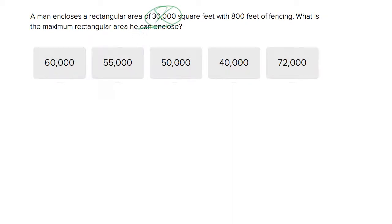Or he could, you might say, he could enclose. So the 30,000 doesn't matter at all. They're basically saying, if I have 800 feet of fencing, what's the biggest rectangular area I can enclose?